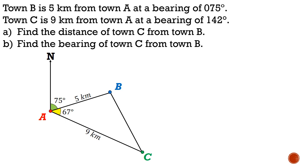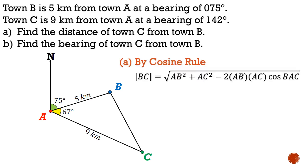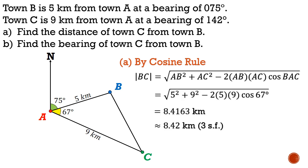Since we know the values of AB, AC, as well as the included angle, the angle in between the two known lengths, we are pointed towards using the cosine rule. Using the cosine rule, we can find the length of BC, and this will give us 8.42km.